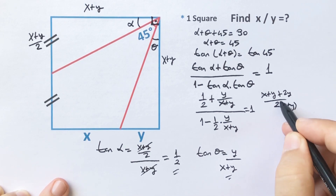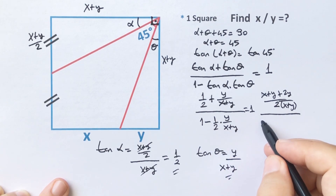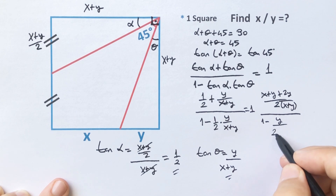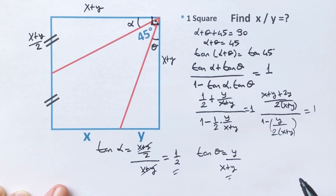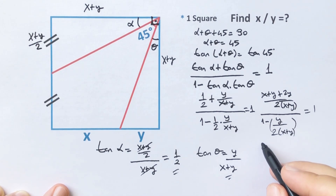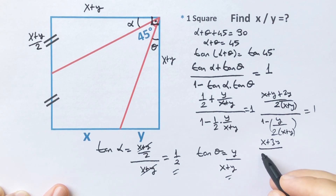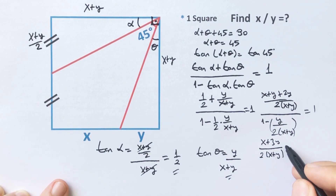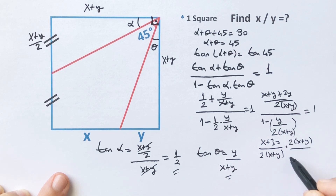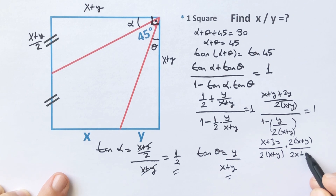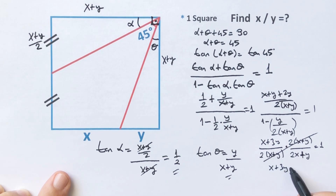The denominator becomes 2(x + y) over 1 minus y over 2(x + y), equals 1. Reversing the expression below and multiplying: times 2(x + y) over 2x + y, equals 1. So these cancel, therefore x + 3y equals 2x + y.